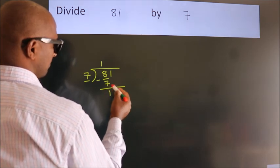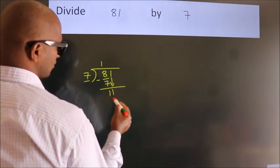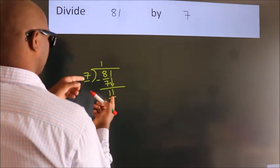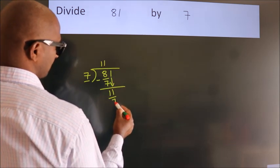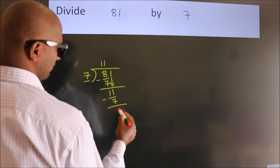After this, bring down the beside number. So, 1 down. So, 11. A number close to 11 in the 7 table is 7 ones, 7. Now, we subtract. We get 4.